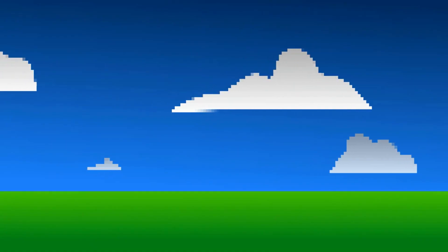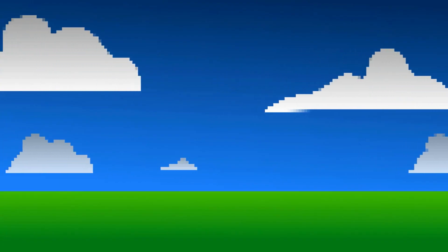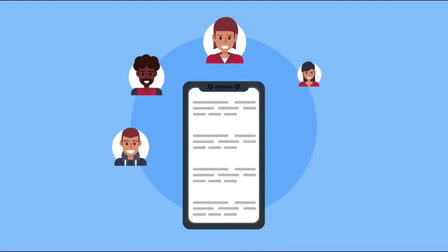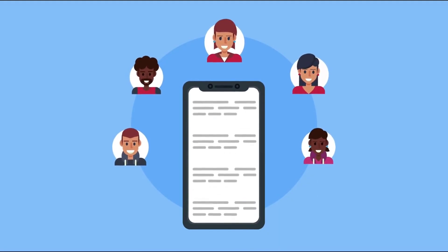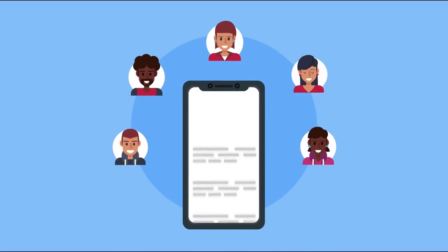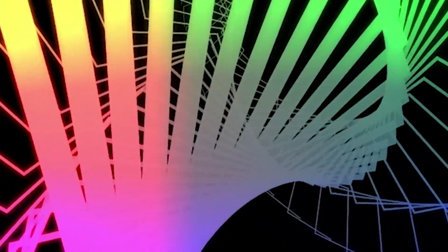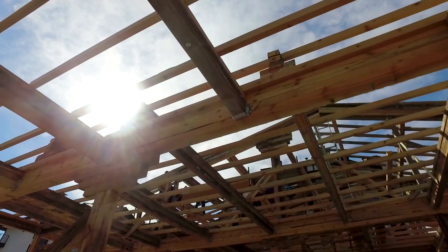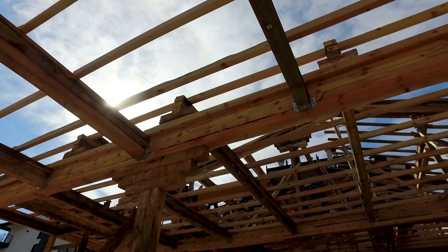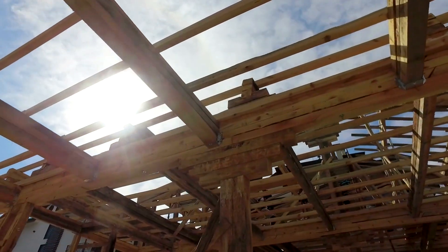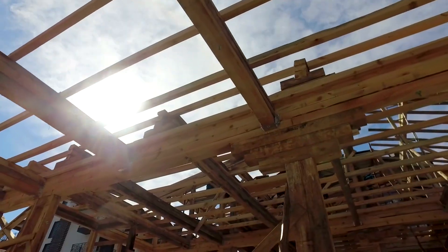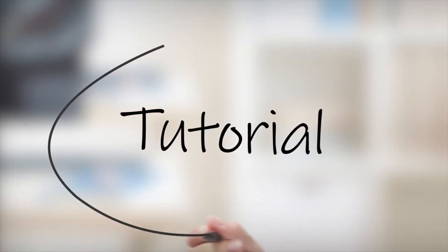First, here's the short answer. Veo 3 currently outputs 1080p landscape videos by default — that's fine for YouTube and desktop. But if you want to create content for TikTok, Instagram Reels, or YouTube Shorts, you need portrait vertical video. And while Google hasn't added a direct portrait mode button yet, there is a way to guide Veo into giving you portrait-style framing using prompt engineering.